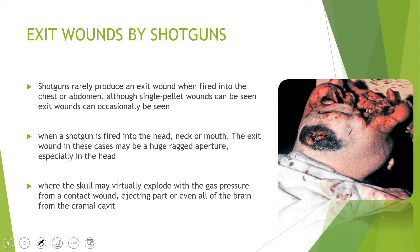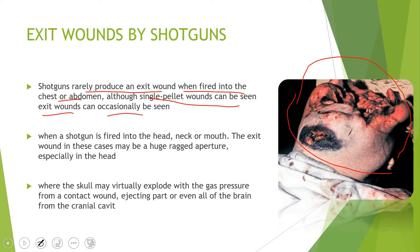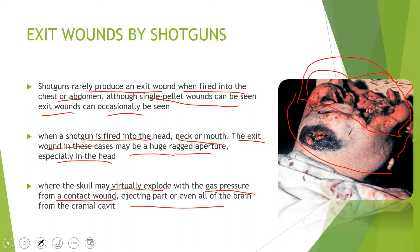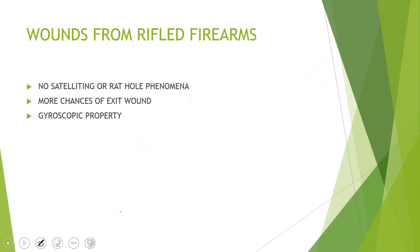Moving on to exit wounds — everything discussed so far was about entry wounds. Shotguns rarely produce an exit wound when fired into the chest or abdomen, although single pellets may occasionally exit. When a shotgun is fired into the head, neck, or mouth, the exit wound may be huge, as the skull may virtually explode due to gas pressure from a contact wound ejecting part or even all of the brain from the cranial cavity.